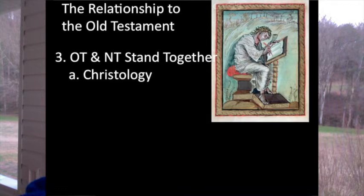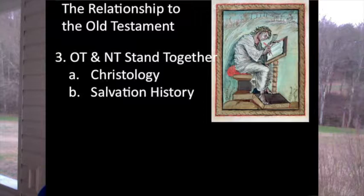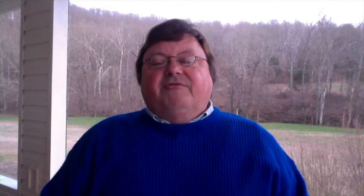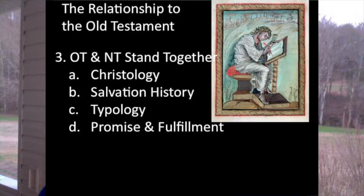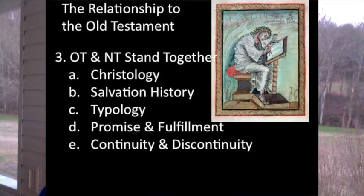Some of the more obvious and important points of continuity include Christology, where certain statements made about Jesus come to fruition in the New Testament; salvation history, where some have argued that Luke-Acts is a New Testament version of the Samuel-Kings tradition or the Chronicler's work; typology, where certain events in the Old Testament are lifted up as types of God's salvific power — already one finds the Exodus serving that purpose in Isaiah, both in his words about the Assyrians and the Babylonians, and the Exodus motif continues in the New Testament; promise and fulfillment, where promises made in the Old Testament clearly find their fulfillment in the New; and the whole business of continuity and discontinuity between the Testaments.